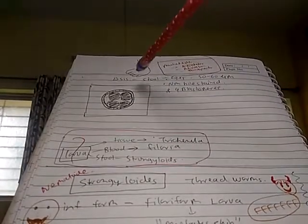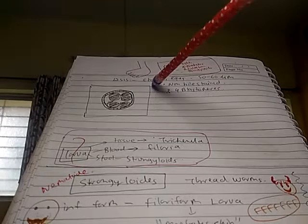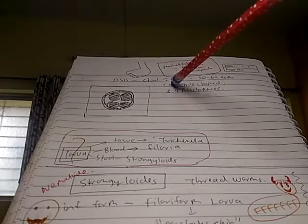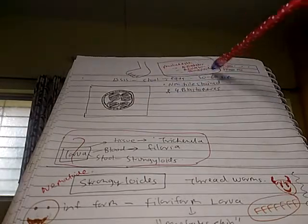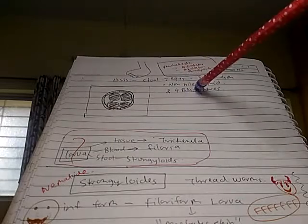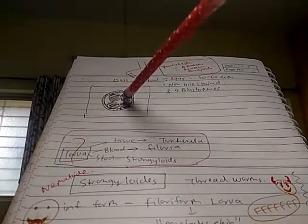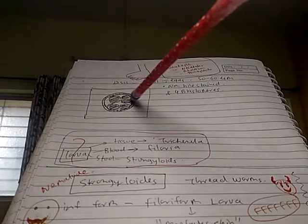Diagnosis of Ankylostoma duodenal: stool examination. Eggs are 50-60 micrometer, non-bile stained eggs with 4 blastomeres.